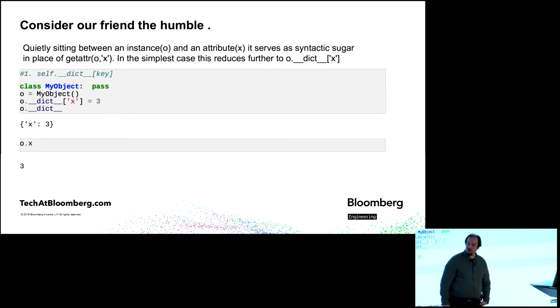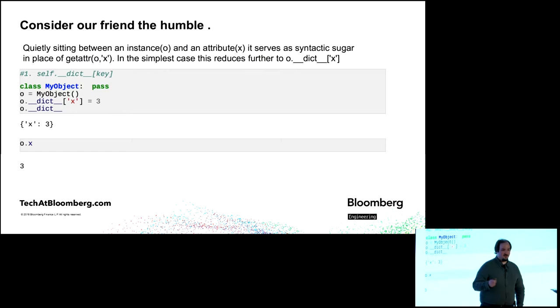But moving on to our friend, the humble dot. The dot usually kind of sits there between our object and our attribute. And we go, oh, that's syntactic sugar for getattr attribute name. Usually that's just going to go to __dict__ and index it and return what it finds. Unless, of course, you went to Gordon's talk earlier, when you know it doesn't quite do that. But we'll go a little deeper into some of the things it does and how.